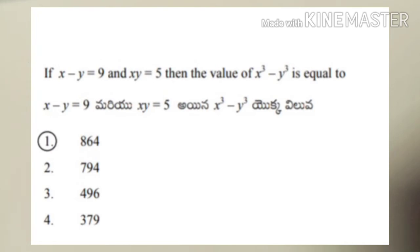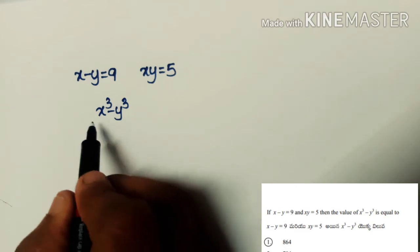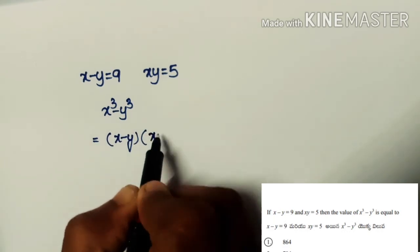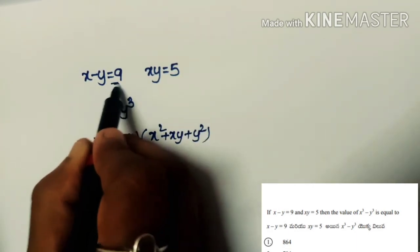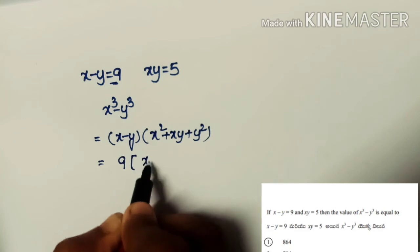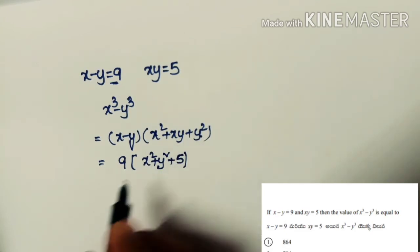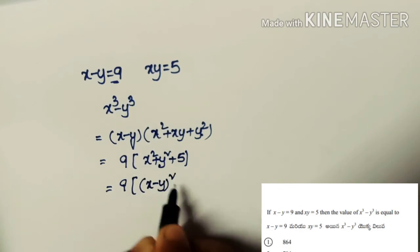Next problem: if x − y = 9 and xy = 5, find x³ − y³. Using the formula: x³ − y³ = (x − y)(x² + xy + y²). We have x − y = 9, so this becomes 9 × (x² + y² + xy). Since xy = 5, we need x² + y².